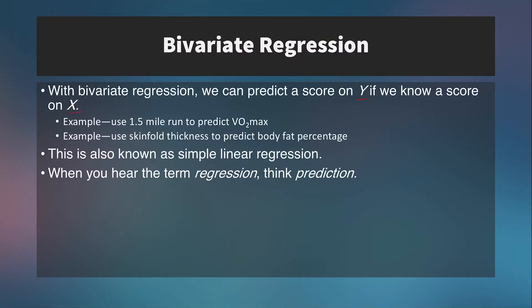Another example is skinfold thickness to predict body fat percentage. We can use a seven-site, eight-site, three-site, or even a one-site skinfold to predict body fat percentage. This works because research has compared actual body fat percentage measured by the gold standard DEXA scan against skinfold thickness at various locations. The original research was actually quite gruesome, involving cadavers — stripping fat off and weighing it — but now we can estimate someone's body fat just by pinching their skin and measuring it.